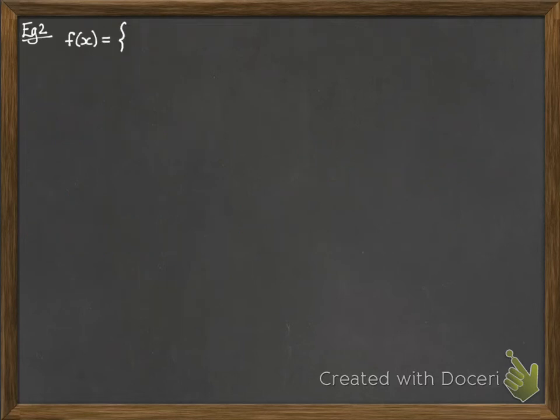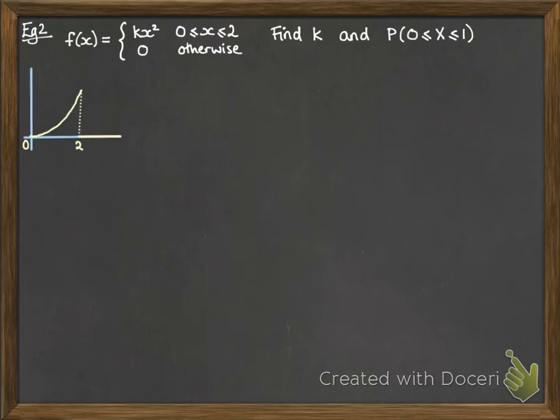So example number two. We've got this one where f of x is our probability density function, but this time we've got a constant k in there. So our first job is to find out what k has to be and then use it to work out a probability. So we've got this graph here. We have a multiple of x squared as our graph, and it's running between 0 and 2, and at any other time the probability is 0.